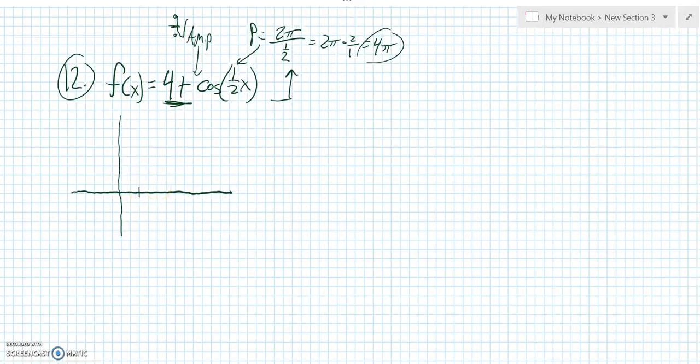So I'll deal with the period. So it will start repeating itself after 4 pi. Half of 4 pi is 2 pi. Half of 2 pi is pi. So pi, 2 pi, 3 pi, 4 pi. Great.